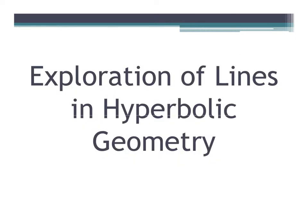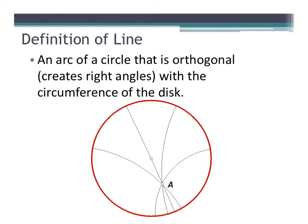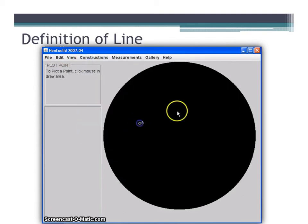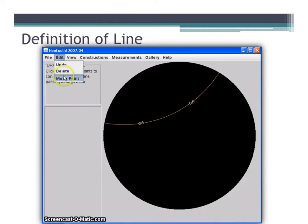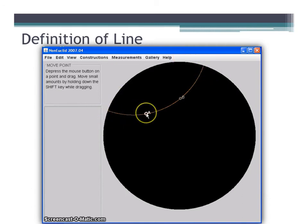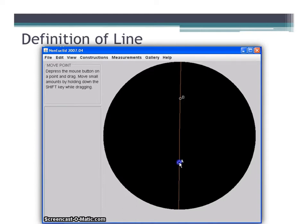Now let's explore lines in hyperbolic geometry. The definition of a line using the Poincaré model is an arc of a circle that is orthogonal with the circumference of the disk — basically, each line on the Poincaré model forms a right angle at the circumference. Let's take a look at lines on the Poincaré disk using the software Non-Euclid. By plotting two points A and B and drawing the line through them, and moving the points, we can notice that no matter where we move points A and B, the line is always perpendicular to the circumference of the Poincaré disk. Also notice that this line will become straight in a Euclidean sense when it passes through the center of the Poincaré disk.